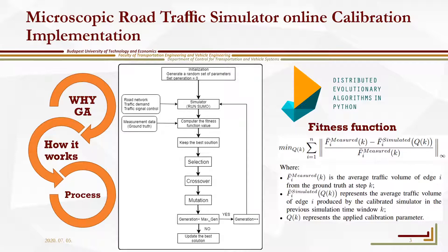When calculating with the genetic algorithm, the parameters to be solved need to be encoded to obtain the individual that represents a feasible solution to the problem — that is, a population.